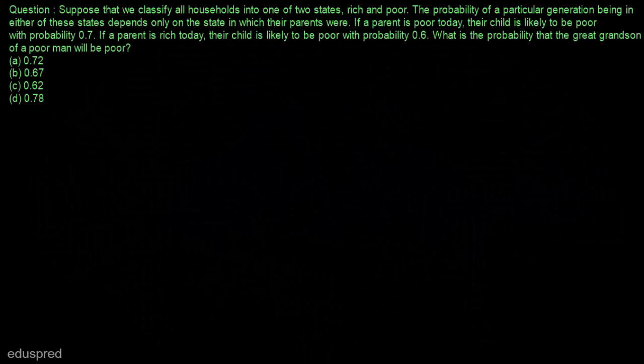In this video, I am going to solve this question. Suppose that we classify all households into one of two states: rich and poor. The probability of a particular generation being in either of these states depends only on the state in which their parents were. If a parent is poor today, their child is likely to be poor with probability 0.7. If a parent is rich today, their child is likely to be poor with probability 0.6. What is the probability that the great grandson of a poor man will be poor?